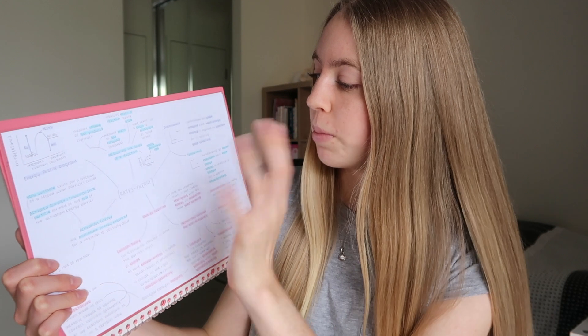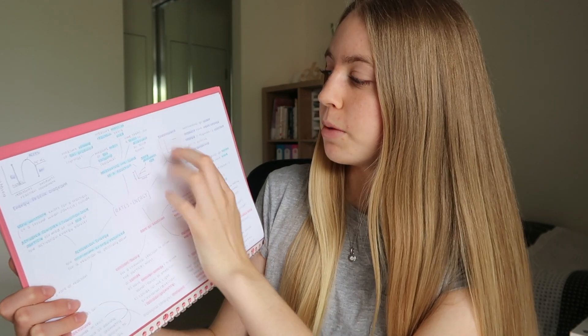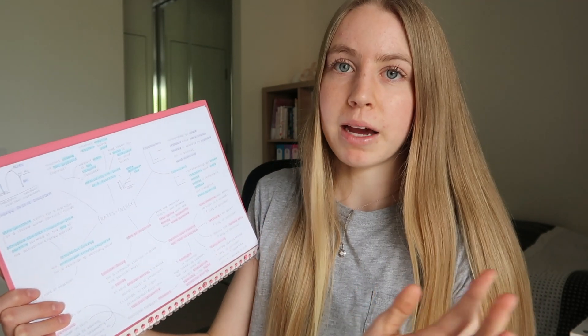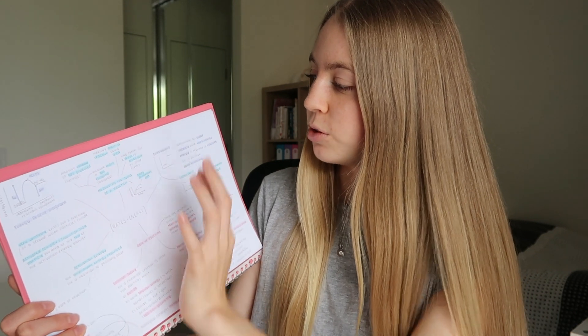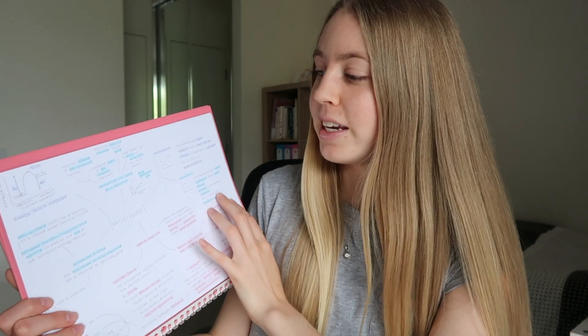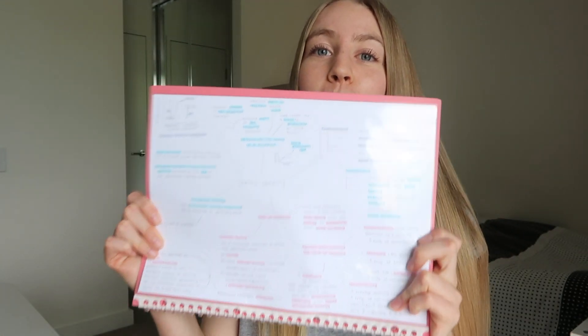For my mind maps, I put the topic heading in the middle — like 'rates and energy' — and then branch off with each subheading, and under each branch I put the really important information from that section. I try to condense everything onto one page. I think that's so important: getting all the information onto one page forces you to focus on what's important and makes studying much easier.